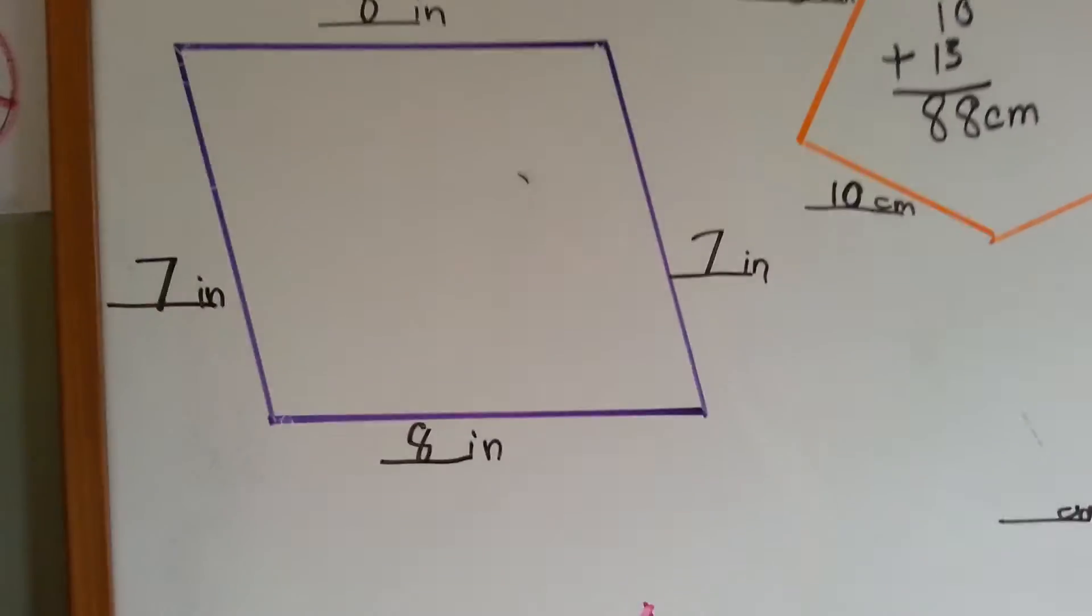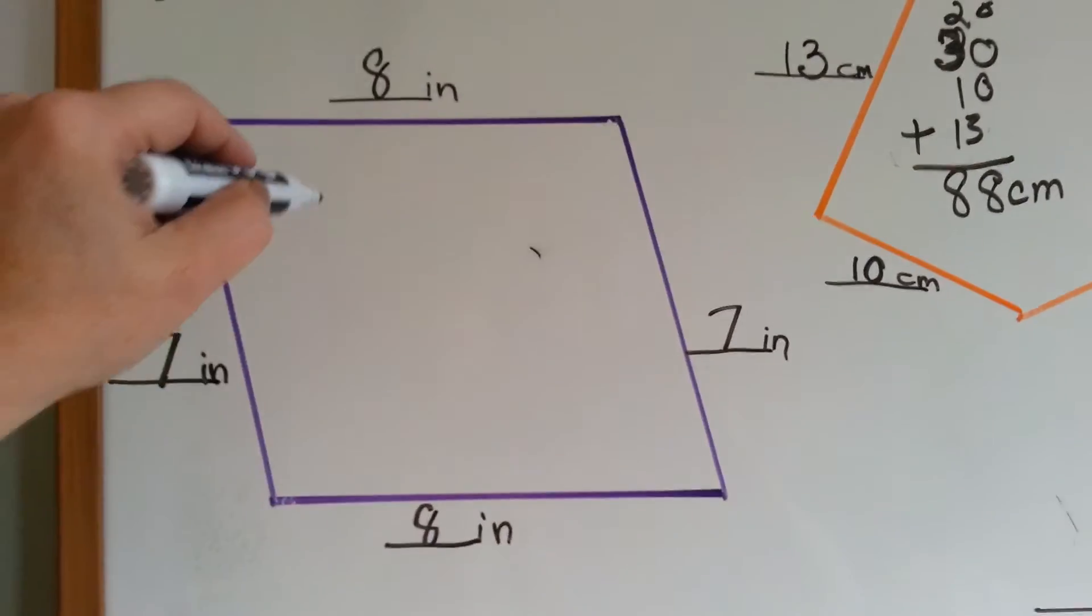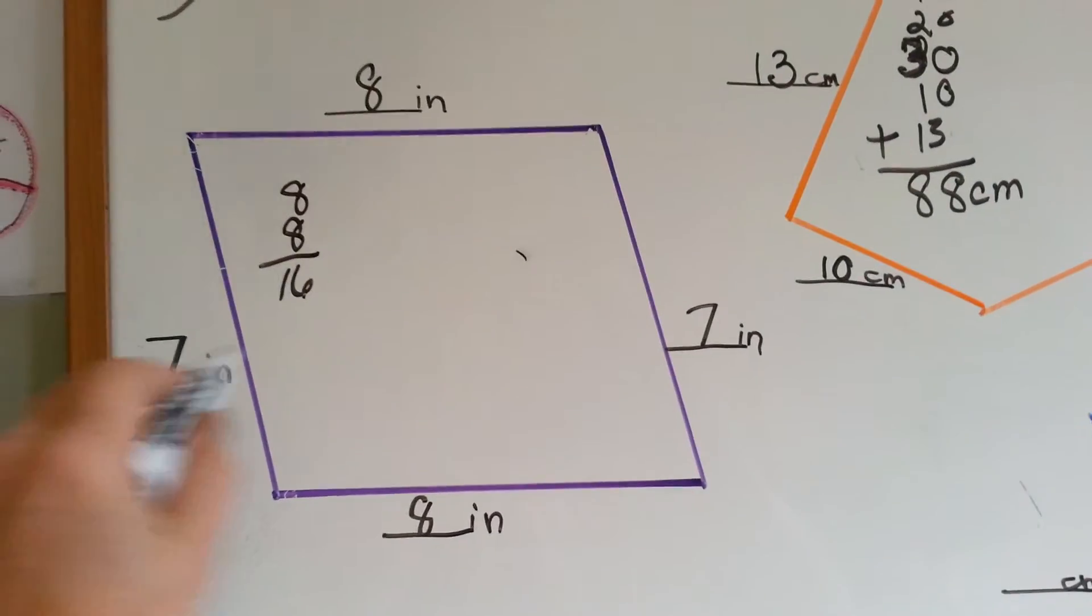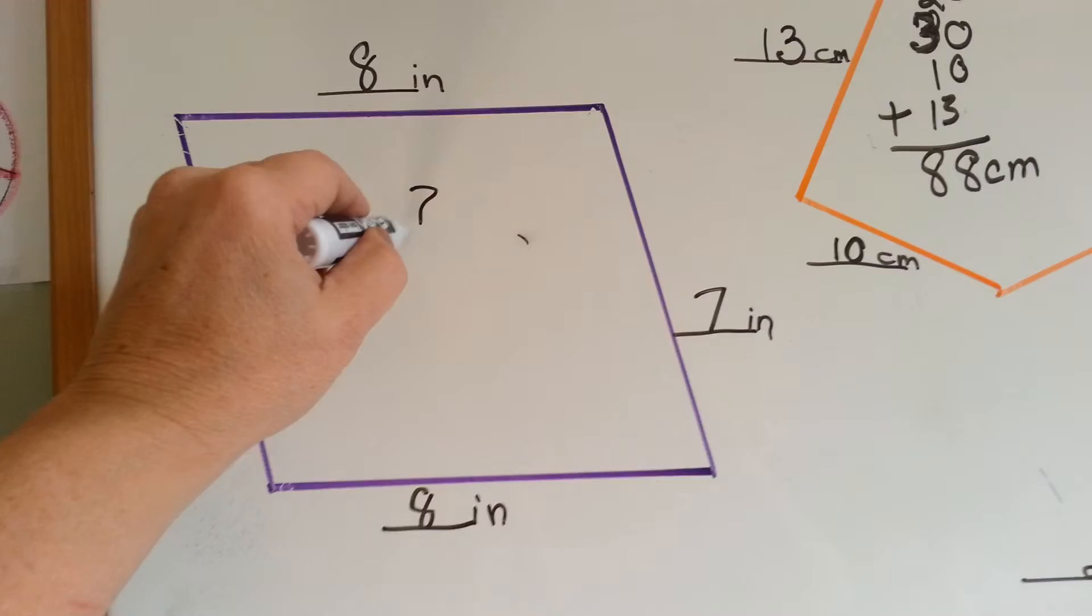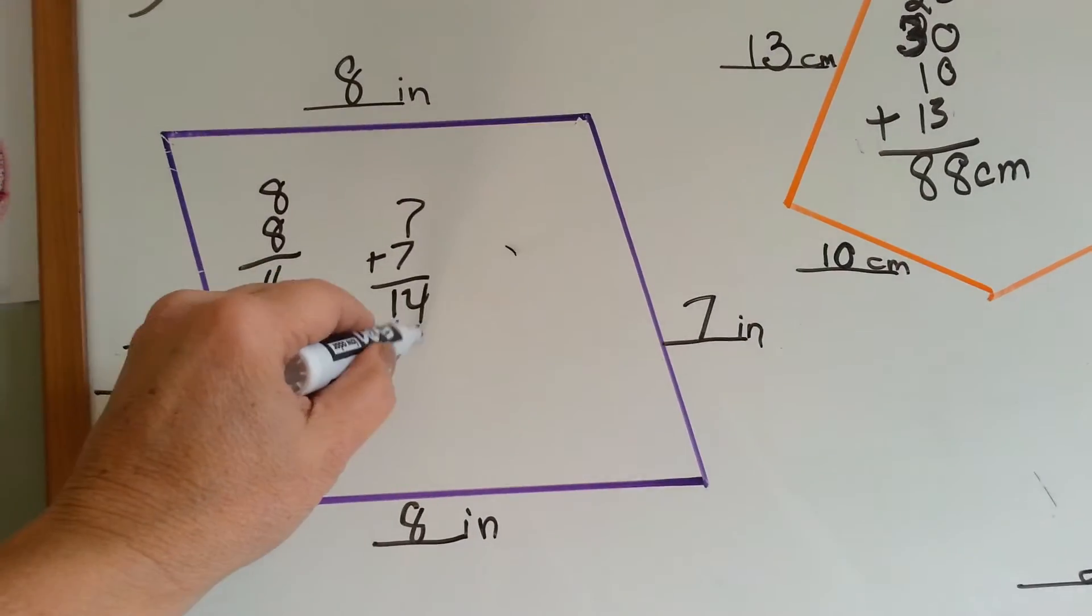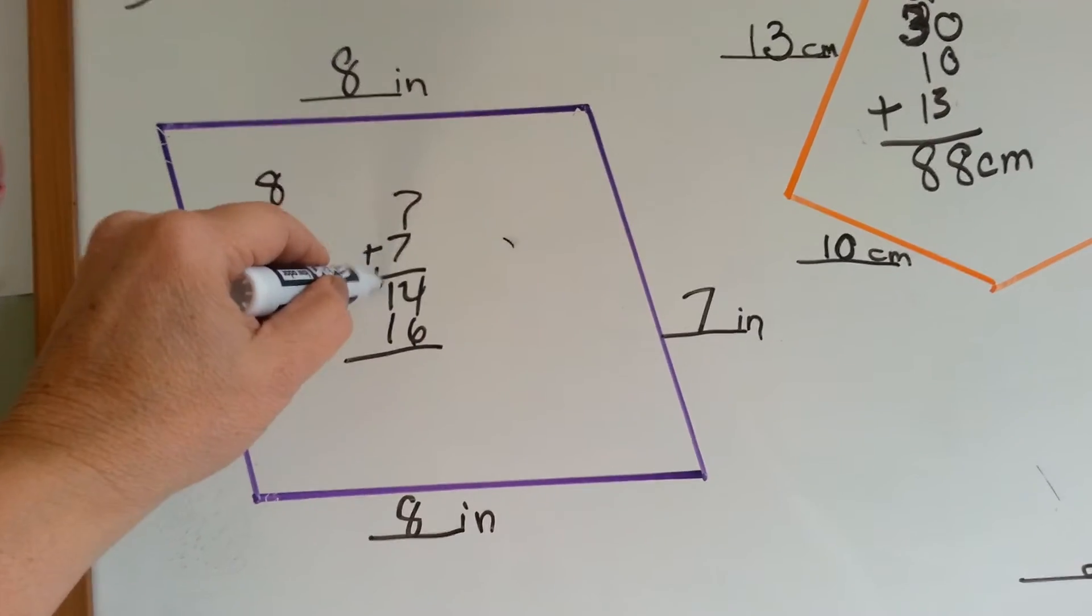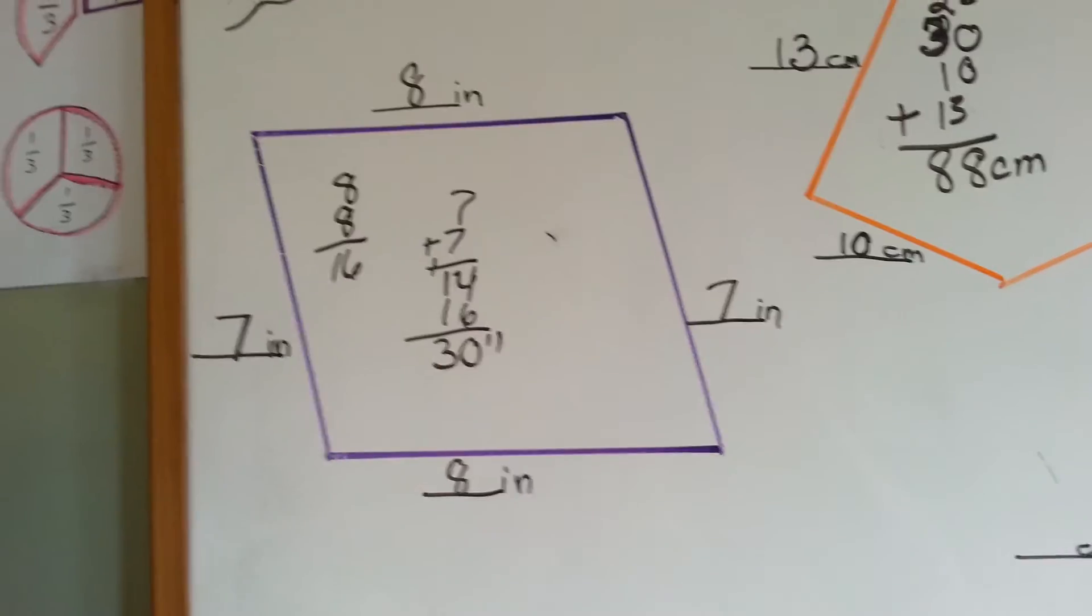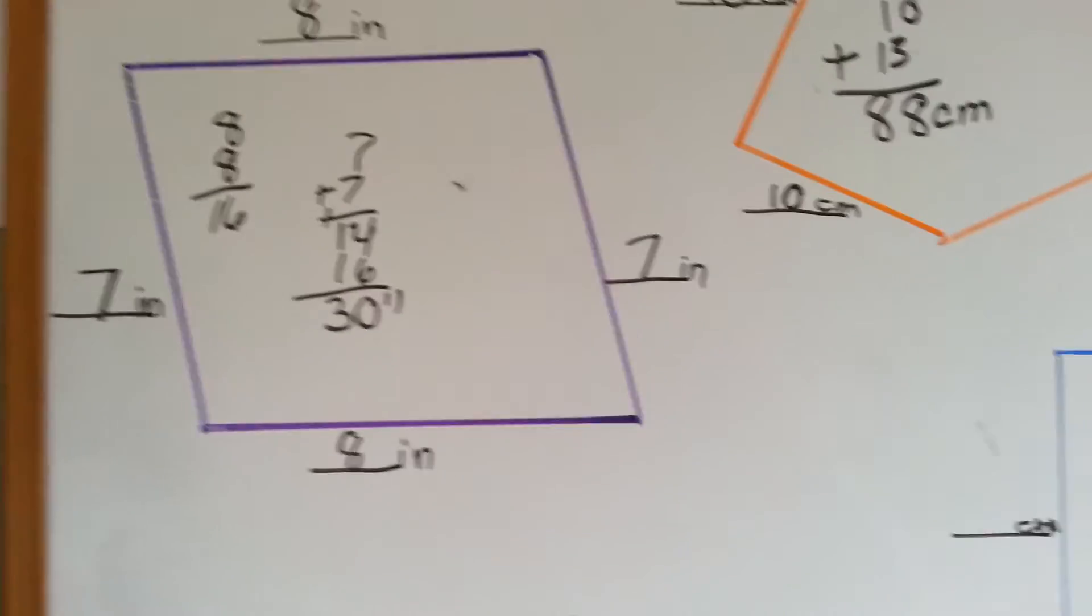How about this one? We've got 8 plus 8, which is 16, and 7 and 7 is 14. We add the 16 and the 14. 6 and 4 is 10, carry the 1, put the 0 down, 1, 2, 3. The perimeter is 30 inches around our purple shape.